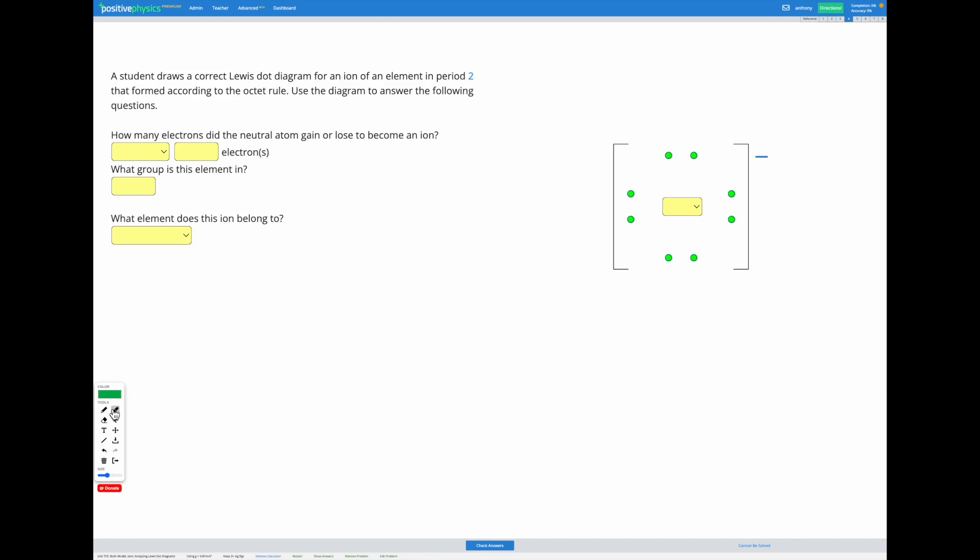In this question we're given a correct Lewis dot diagram for an ion of an element in period 2 that formed according to the octet rule. If we look at our diagram we can see we've got eight valence electrons shown in our shell and a charge of minus one.